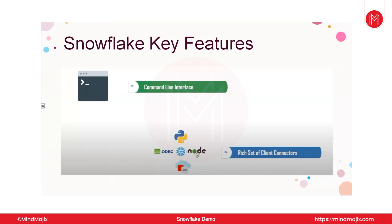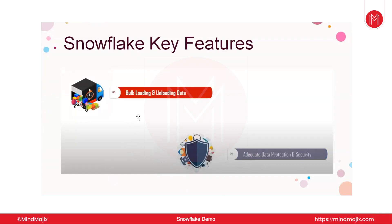For bulk loading and unloading, Snowflake can consume data from Amazon S3 or any kind of data lake. You can stage data in Snowflake — whether Parquet, CSV, or any file format — and use the bulk loading concept to load all that file data into the Snowflake data warehouse. There is also a Snowpipe concept for continuous data loading. We'll discuss all these things in dedicated practical sessions covering bulk loading, unloading, staging data, and Snowpipe.